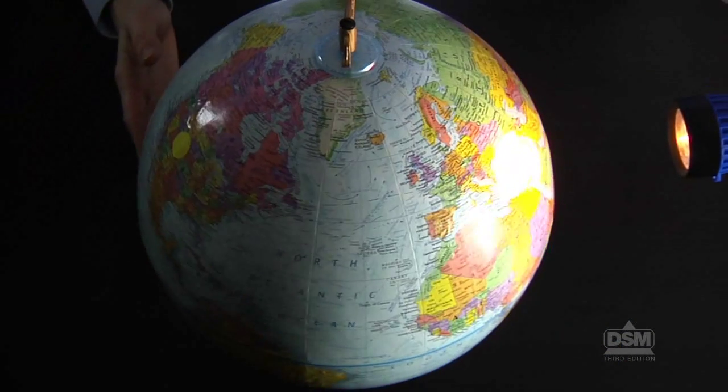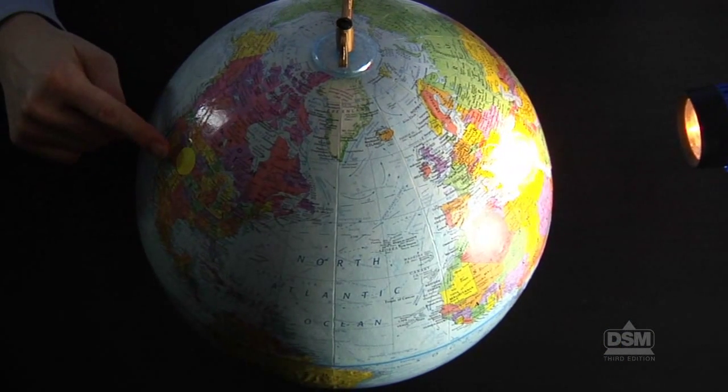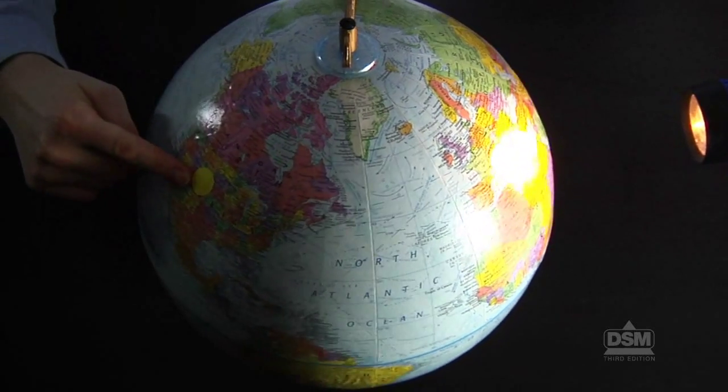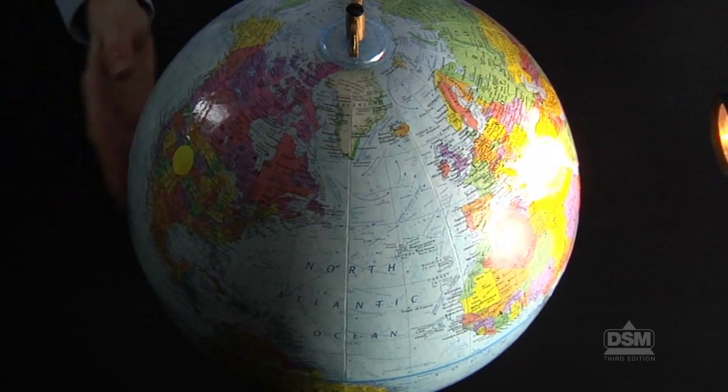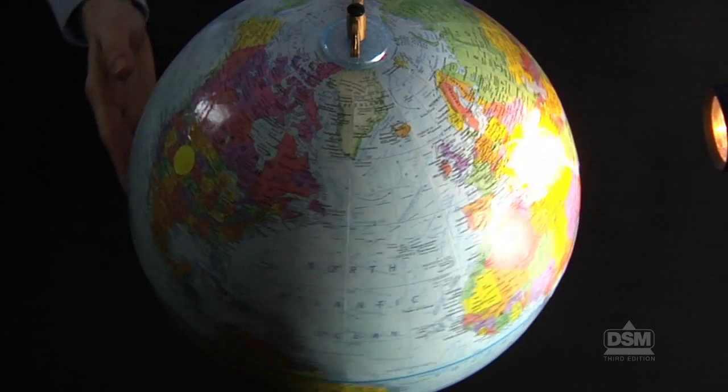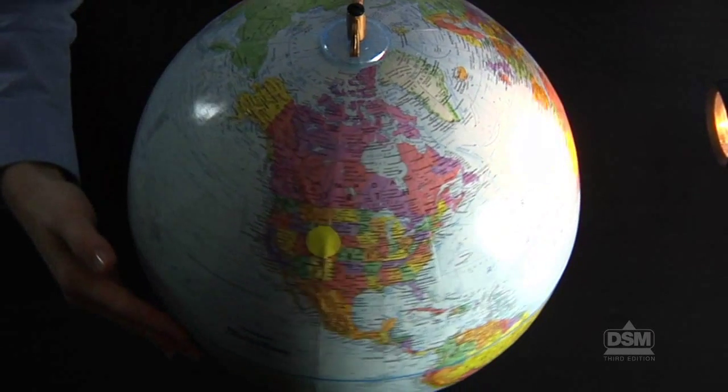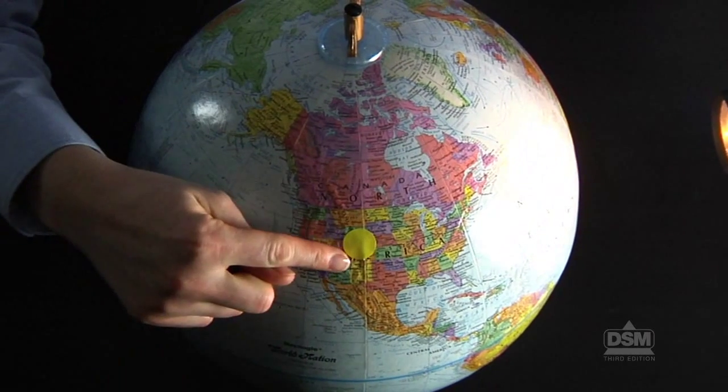Darken the room and turn on the flashlight. Position the globe with the tape facing away from the light at the middle of the night position. Then, slowly turn the globe counter-clockwise and tell students to watch the dot carefully.